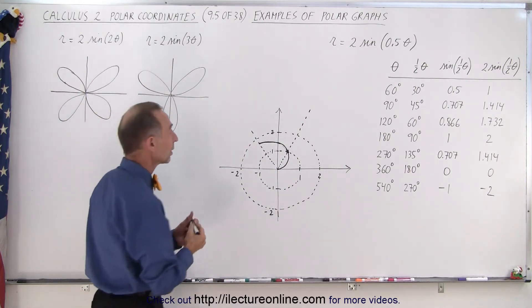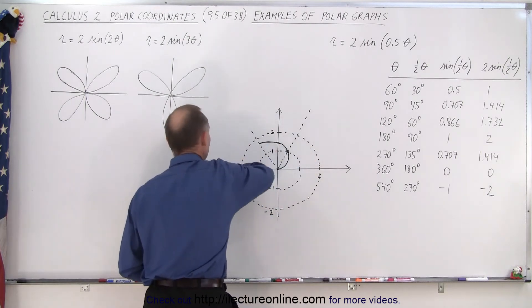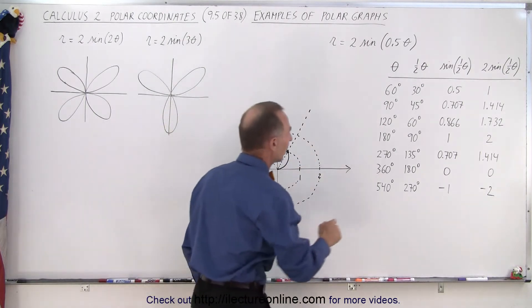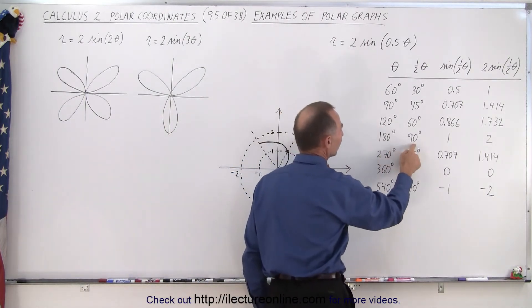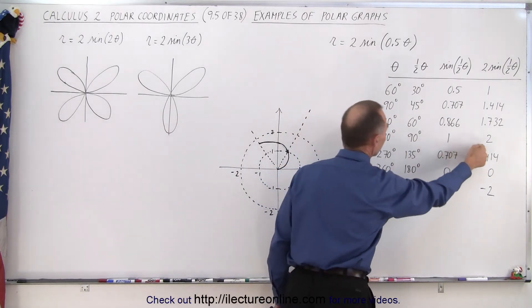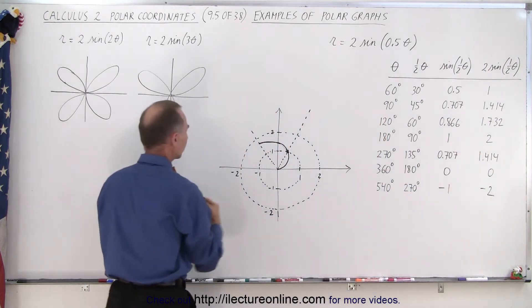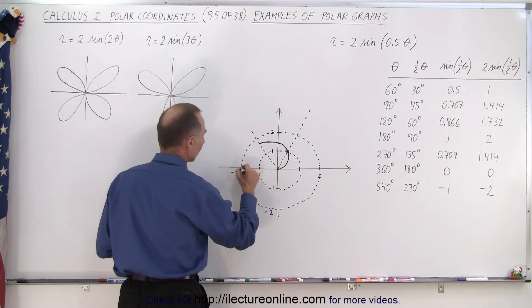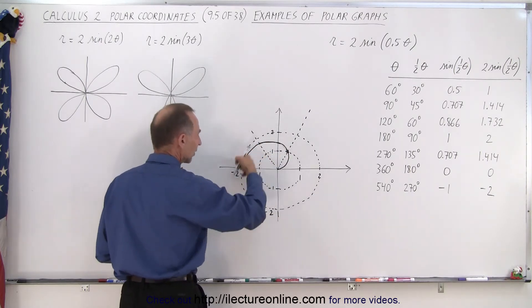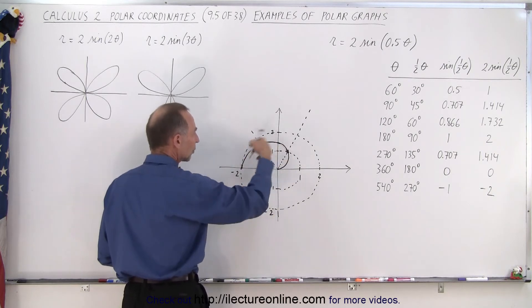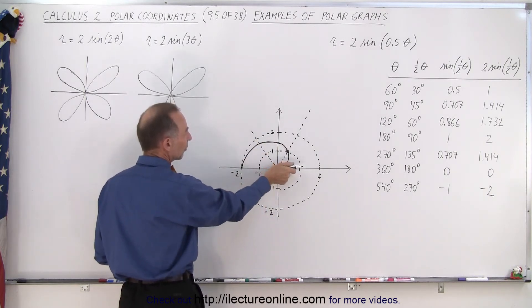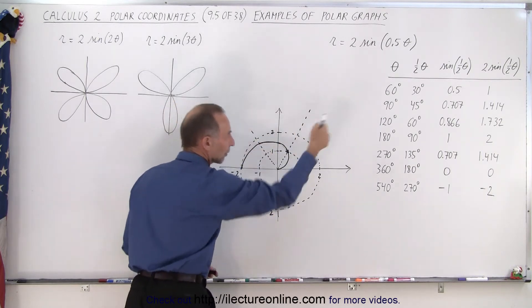How about 180 degrees? Now we're pointing in the negative x direction. 180, take half of that is 90, the sine of 90 is 1, double that is 2. So in this direction we're now at the value of 2. You can see that that line then continues like this. So that's the first 180 degrees, that's the radial distance from the origin outward for those various angles.